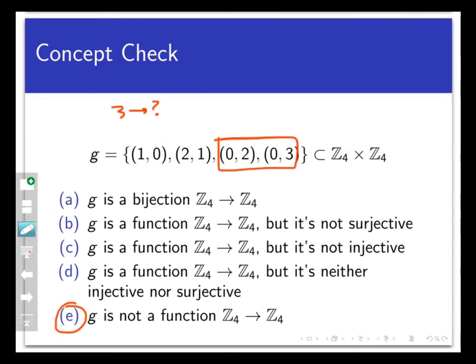Second, the other reason G was not a function was because the input 0 split and mapped to both 2 and 3. Now why did that happen? Well, it's because in F, the original set of pairs, we had a collision. 2 and 3 both mapped to 0. So when we turn that around by reversing the order of the pairs, that collision turns into a split. So if F isn't injective, then the reverse order set G will not be a function because the collisions will turn into splits.